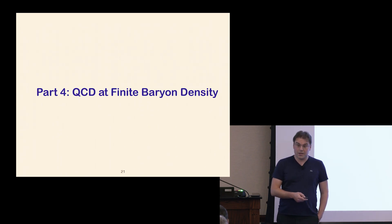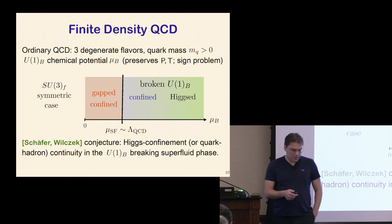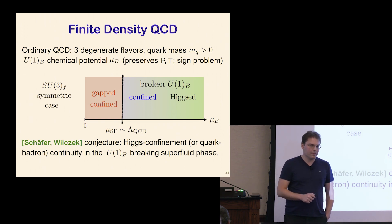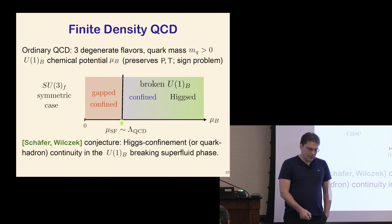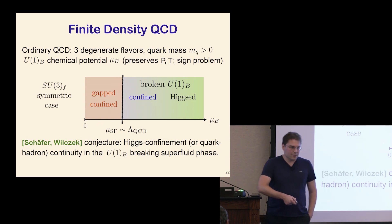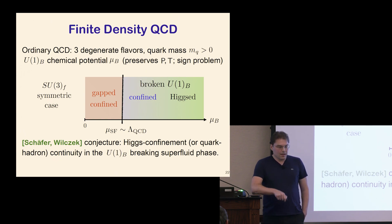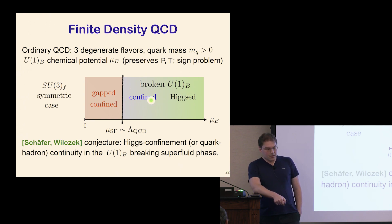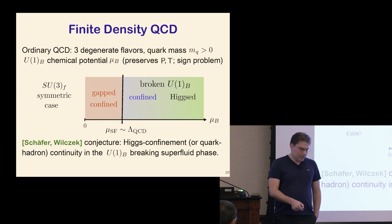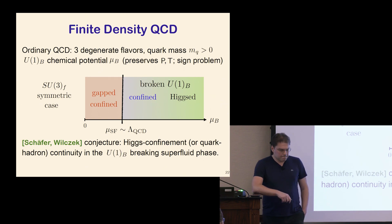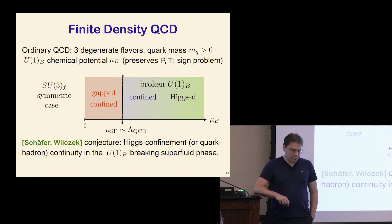A brief reminder of what is known about finite-density QCD, assuming for simplicity the SU(3) flavor symmetric case with degenerate quark masses: at sufficiently large chemical potentials for baryon number, roughly around baryonic densities, it's believed there's a phase transition to a U(1)_B-breaking superfluid phase. This regime is believed to be smoothly connected to the very high-density Higgs phase. Thomas Schaefer and Frank Wilczek explicitly conjectured these two regimes are smoothly connected — they called it quark-hadron continuity, an example of Higgs confinement continuity.